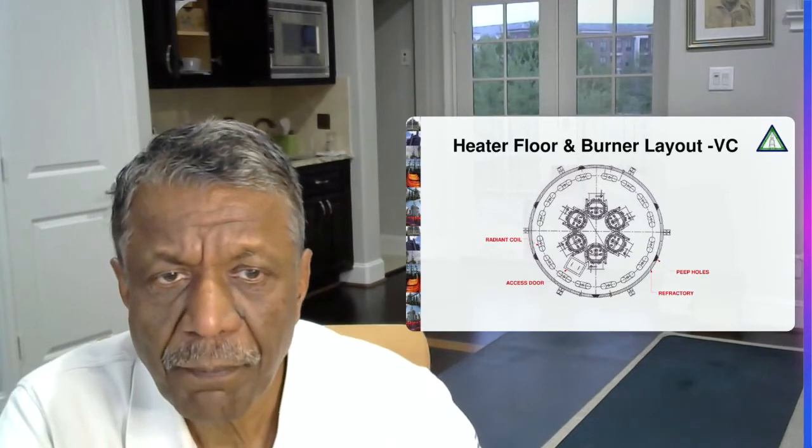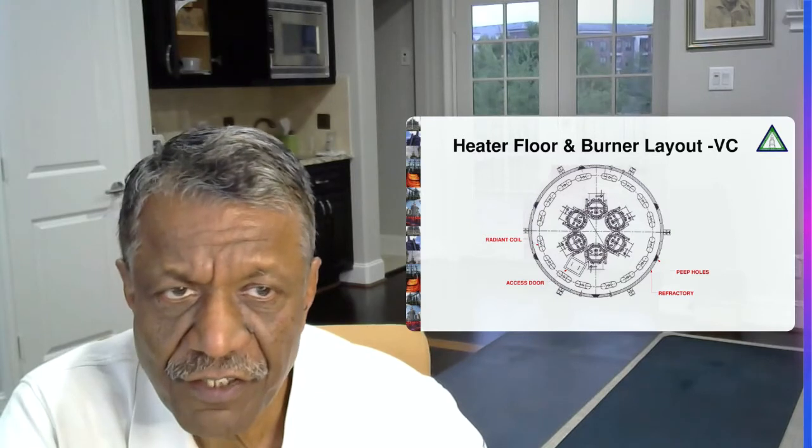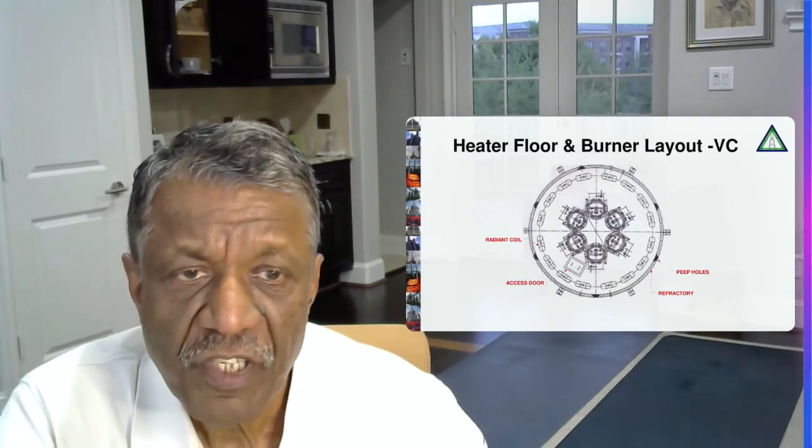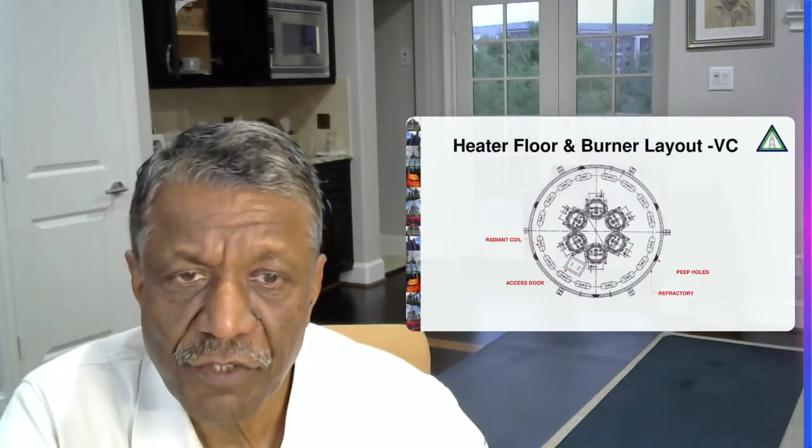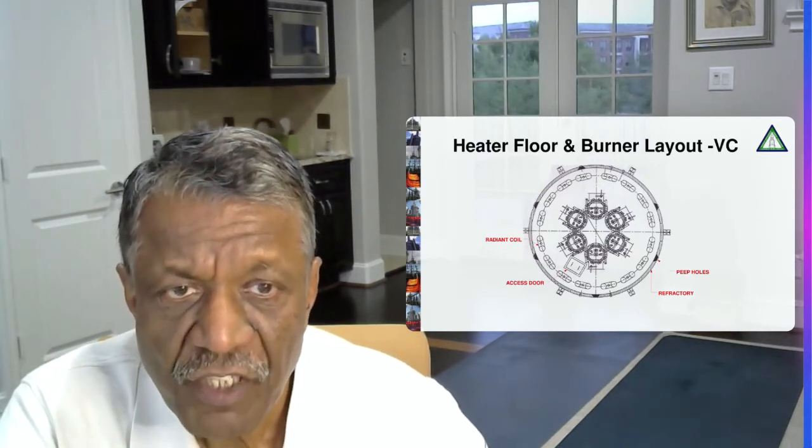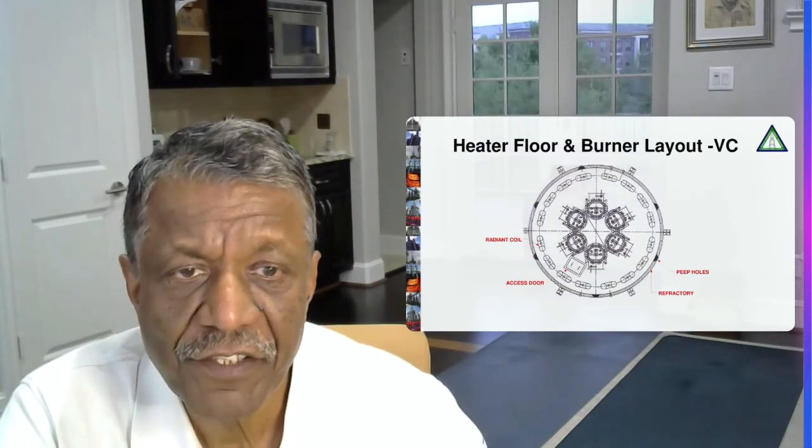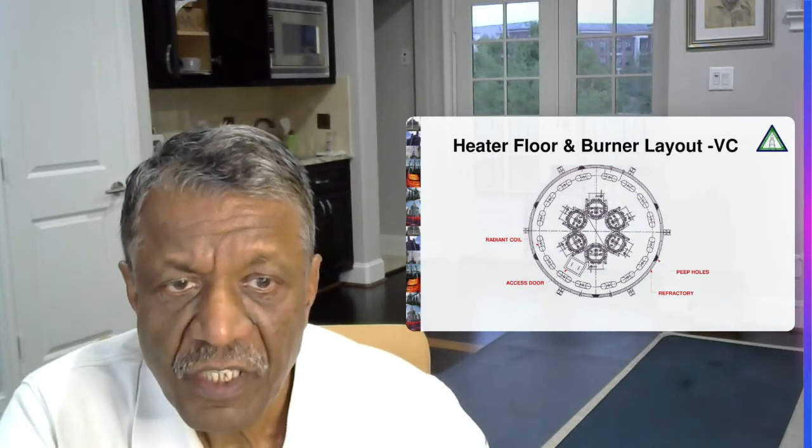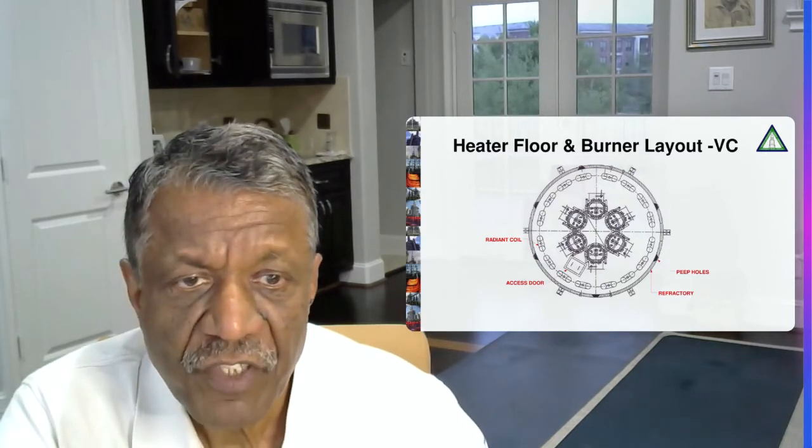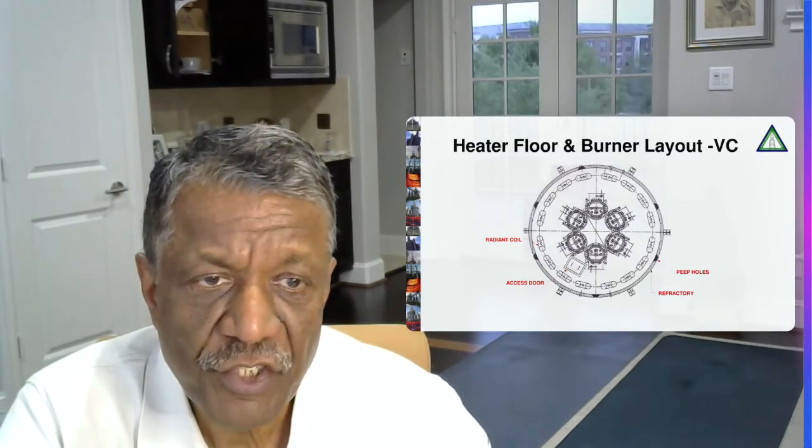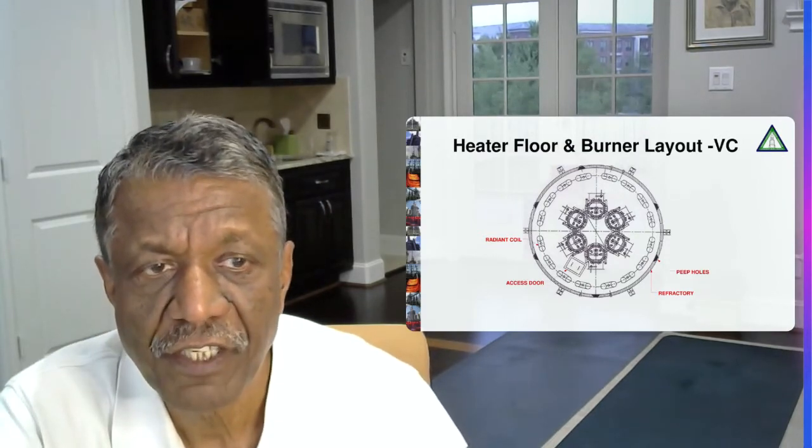I'm showing you a plan view of a vertical cylindrical radiant section. This is basically a heater floor view. You can see six burners installed in a circle. That circle is known as burner circle diameter. You can also see the radiant tubes which are installed again in a circle, and that circle is known as tube circle diameter. And then we have the refractory lining and steel casing on the outside. You can see an access door in this picture, you can see refractory lining and peep holes in this picture for a vertical cylindrical heater.